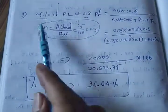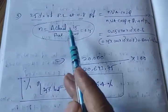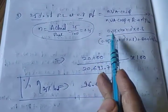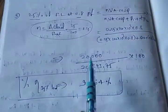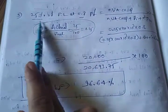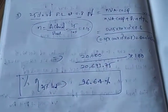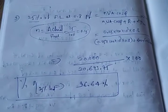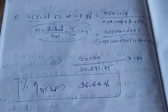Similarly, if they ask for 75 percent load, simply use n = 0.75 and substitute. For 60 percent load, use n = 0.60, and so on. You can make those changes accordingly. Practice all the numericals I have solved. Thank you.